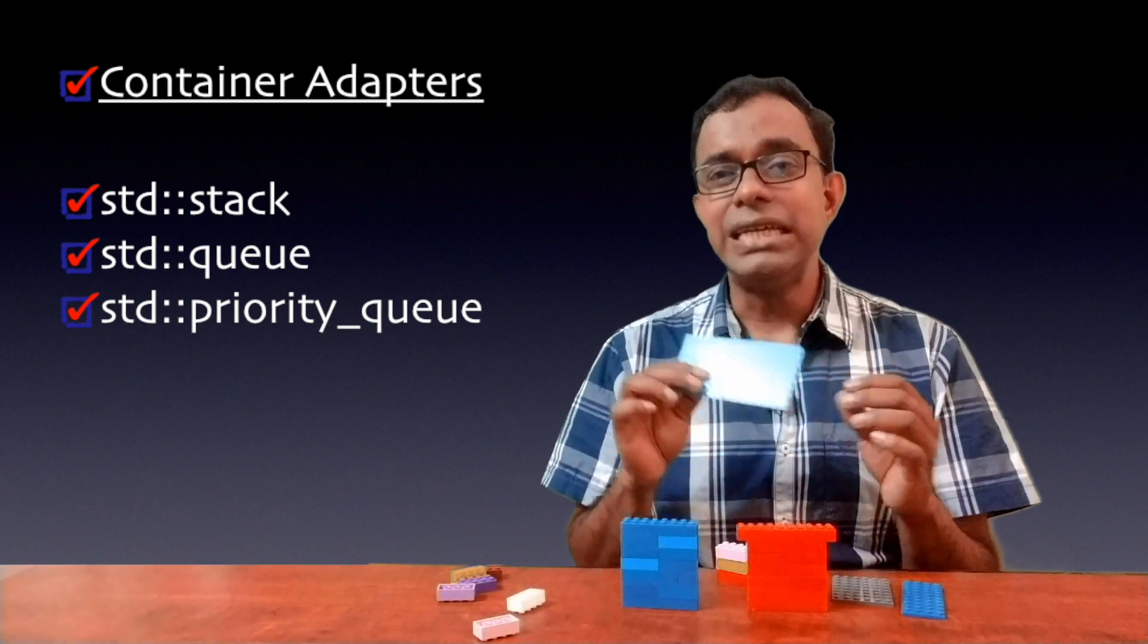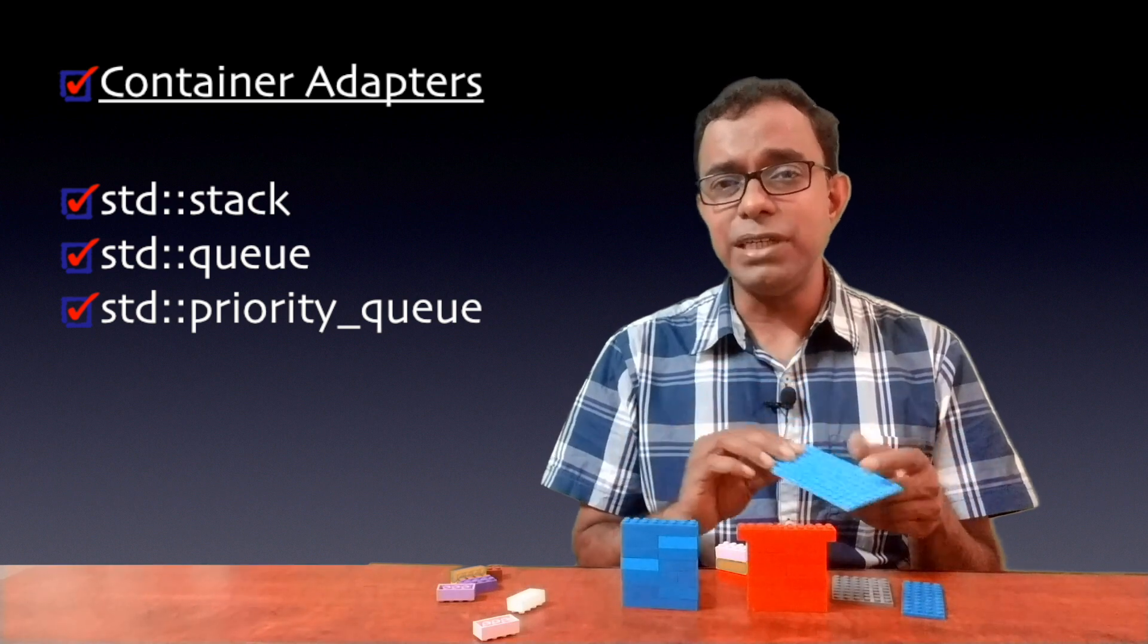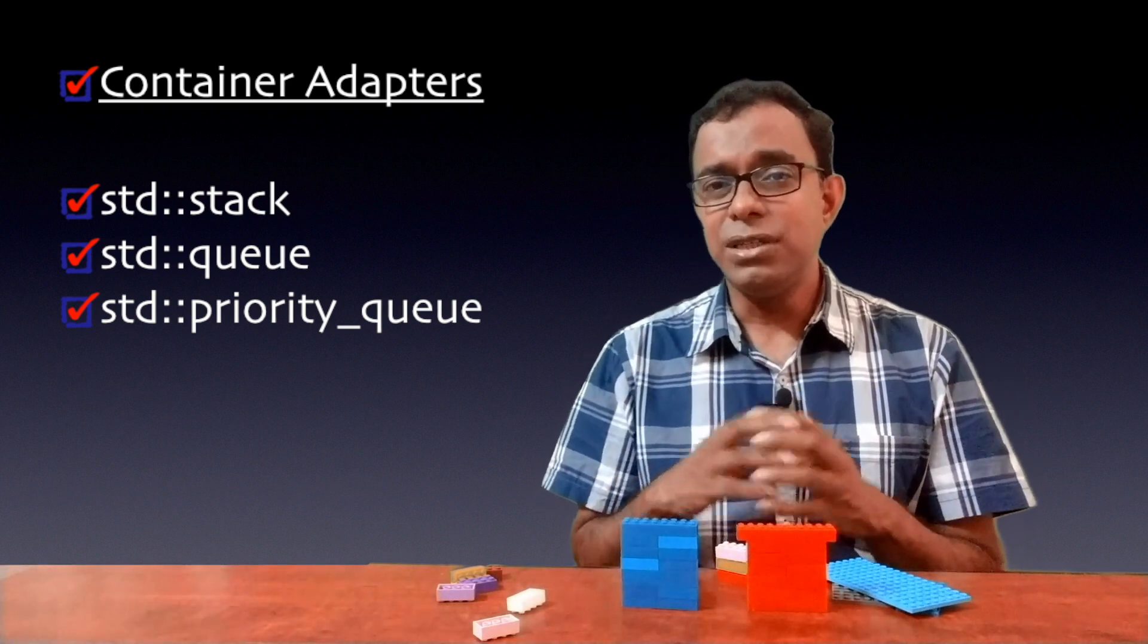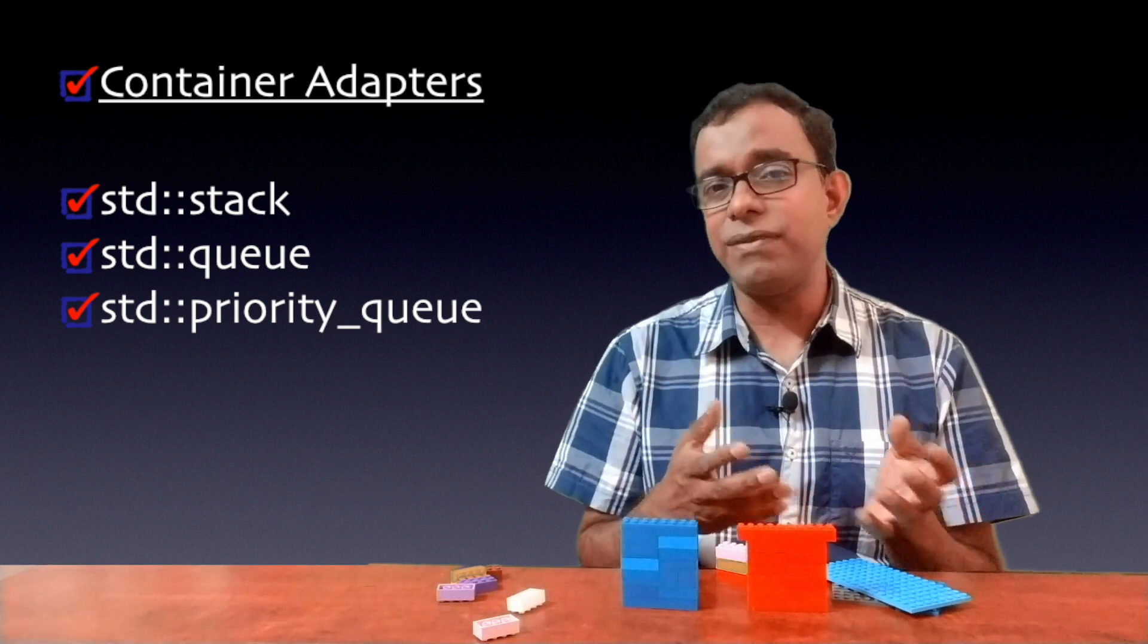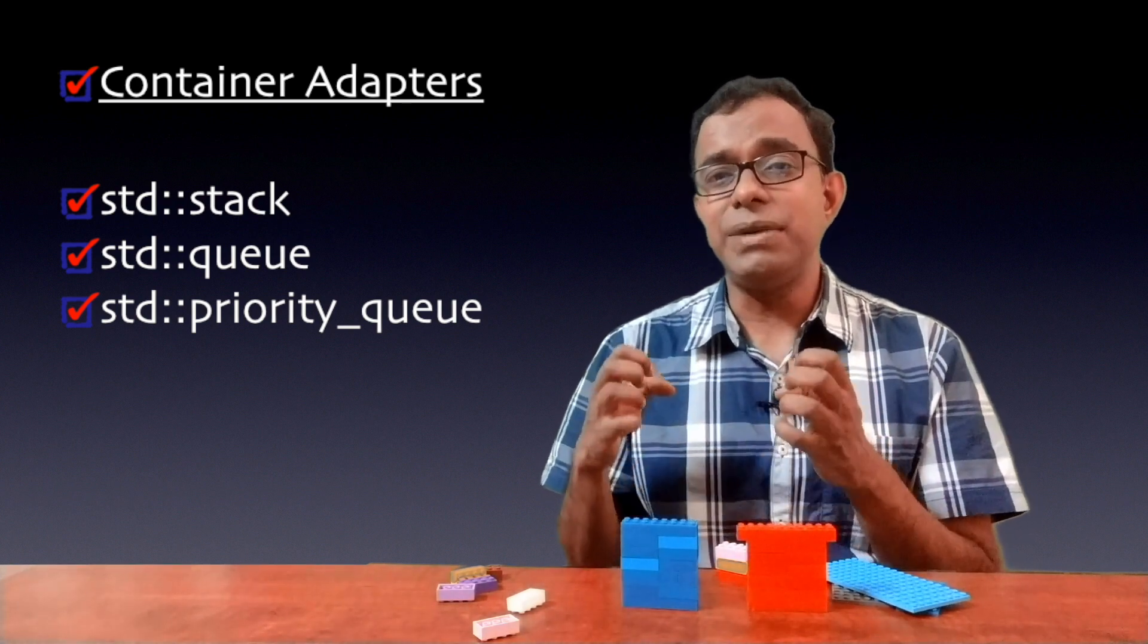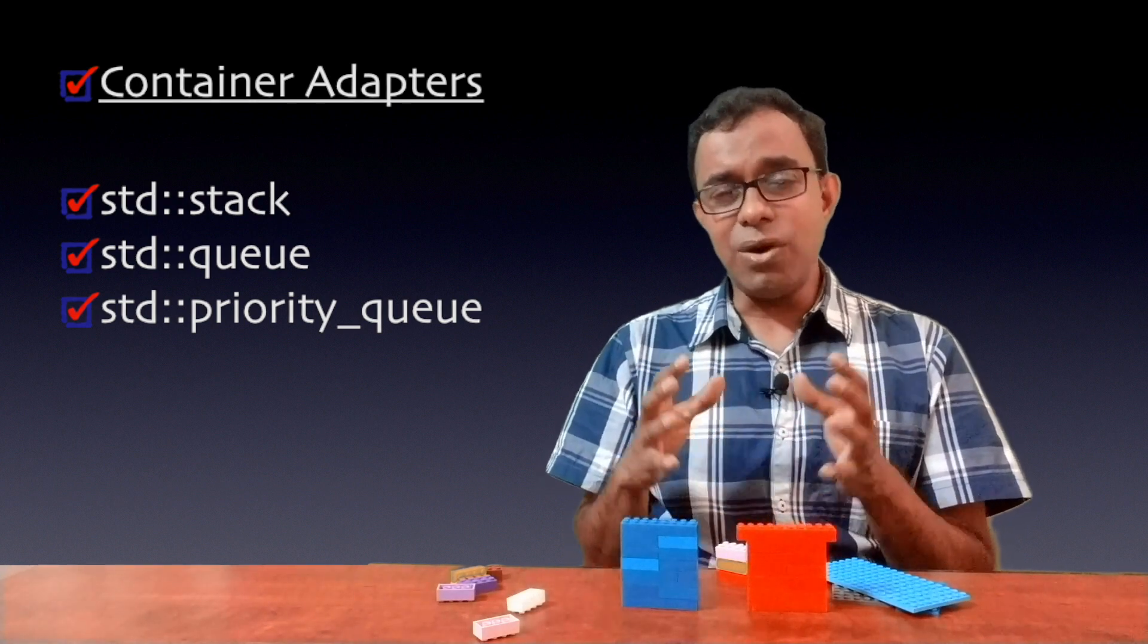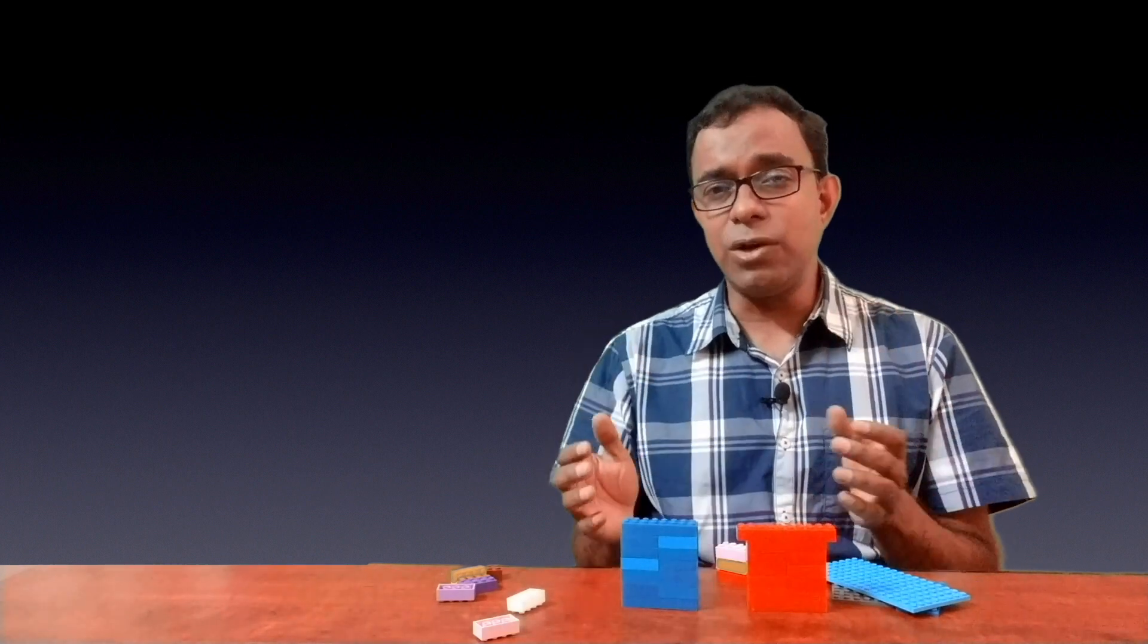That's the reason these data structures stack, queues and priority queues are called container adapters. You can change the data storage that is the container. In these container adapters, we use sequence containers because for stack, queue and priority queue, you don't want to use associative container to store data in a sorted way or in a hash table undefined order because stack, queues and priority queues demand some integrity of data in the way it is inserted. That's all about different types of containers and container adapters using Lego blocks.